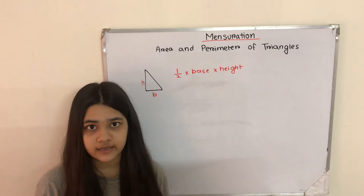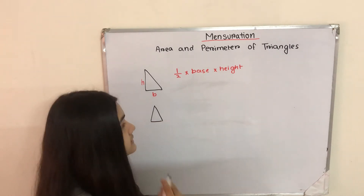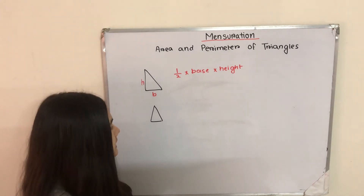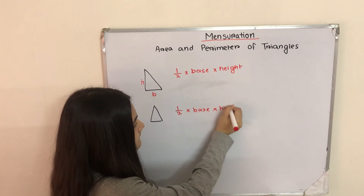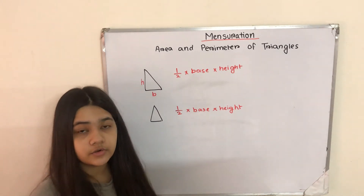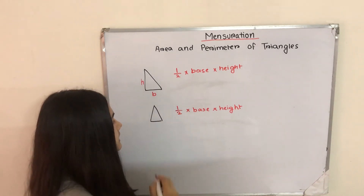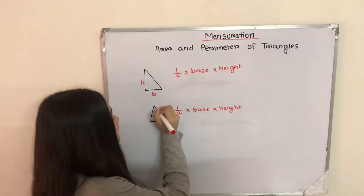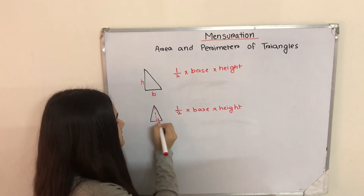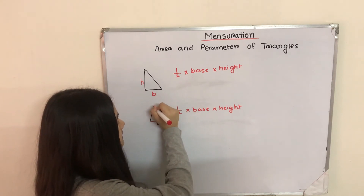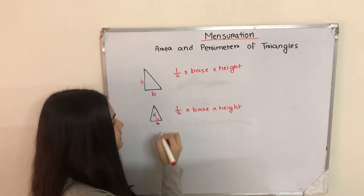If the triangle is not a right angle triangle then it might look something like this. Assuming that the height and the base are given, we can use the formula half into base into height again. However, we need to note that in this triangle neither this side nor this side is the height of the triangle. The perpendicular height is the height of the triangle, and where it lands is the base of the triangle.